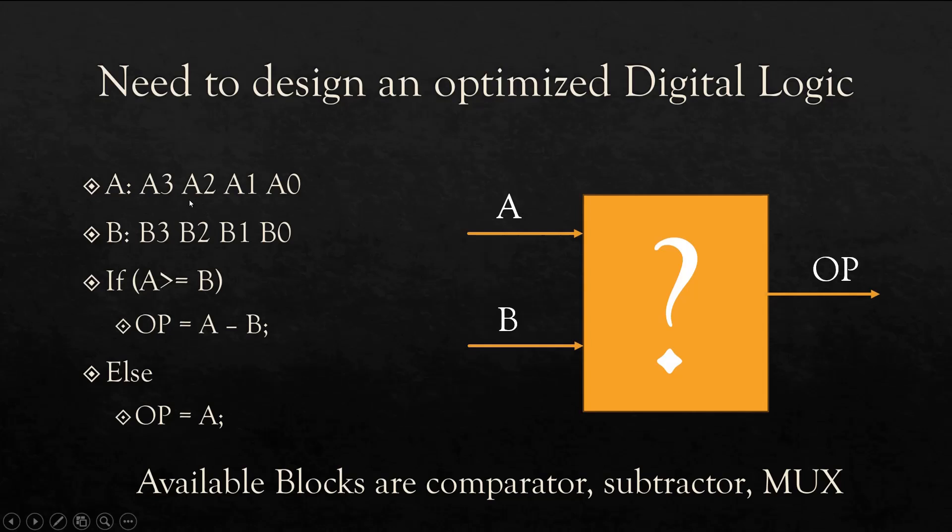It has two inputs A and B. A is four bits long: A3, A2, A1, A0. Similarly, B is B3, B2, B1, and B0. Its output depends upon the input values A and B. If A is greater than or equal to B, output should be equal to A minus B, that is the subtraction of A minus B. Else, output should be equal to A.